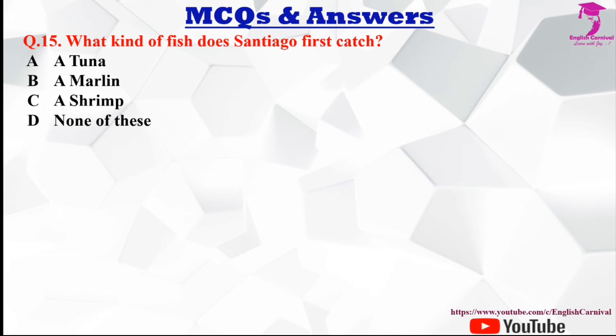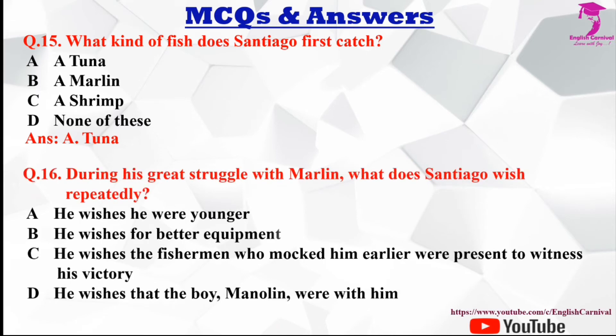Question number fifteen: What kind of fish does Santiago first catch? Options are A tuna, B marlin, C a shrimp, and D none of these. The correct answer is A, tuna.